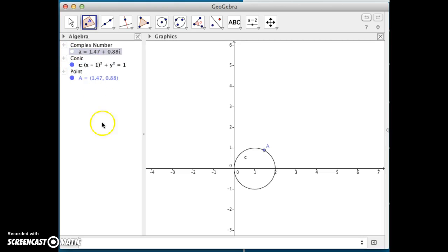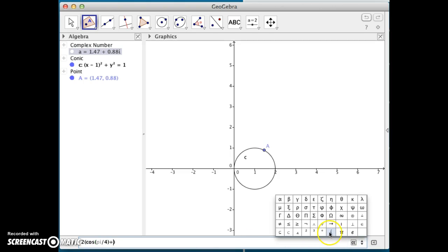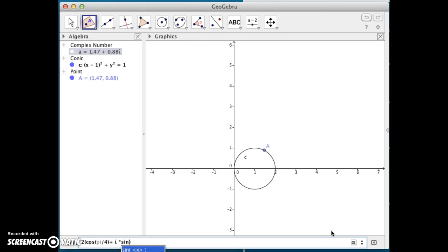So, I'm going to hide that complex number A, and now I want to apply the first function, which was 2 times the cosine of pi over 4 plus that imaginary unit i times the sine of pi over 4, times that complex number input, which we've named A, and it gives me Z1.